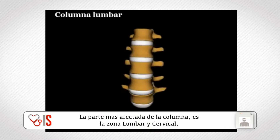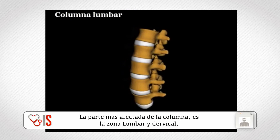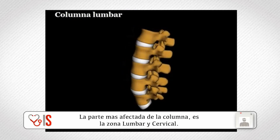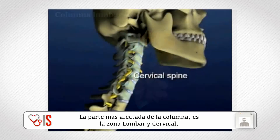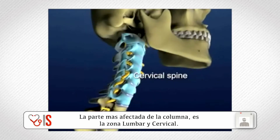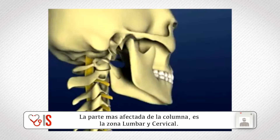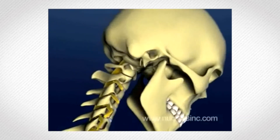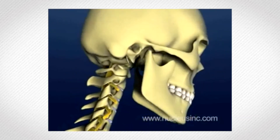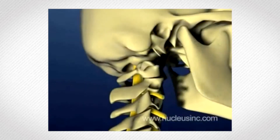En la zona lumbar hay desgastes discales, espondilolistesis, secuelas de fracturas, artrosis. Y la parte cervical también es muy similar en afecciones porque hay también artrosis y enfermedades que desgastan el disco. Es lo más común.